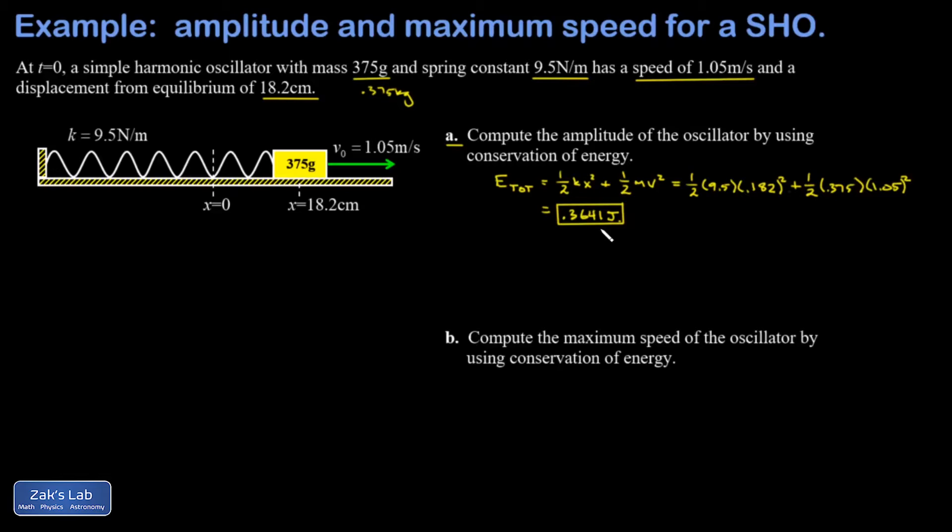Now to actually answer the question in part a, we want the amplitude of the oscillator. What we look at is the moment where the displacement from equilibrium is maximum, and that's the turning point where the mass is temporarily stationary as it's turning around. At that point there is no kinetic energy and all the energy is in the spring.